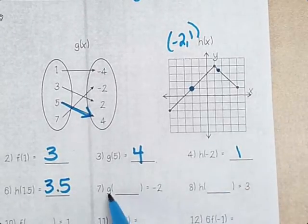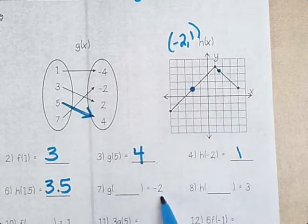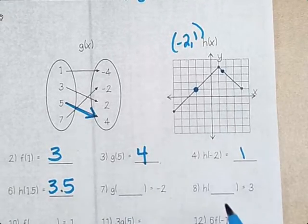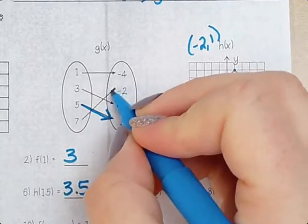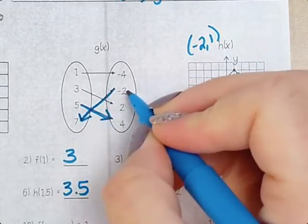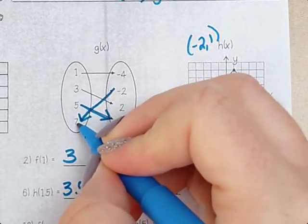Number 7, g of something equals negative 2. What is it? 7. Yeah, we're going to see if y is negative 2. What is x?